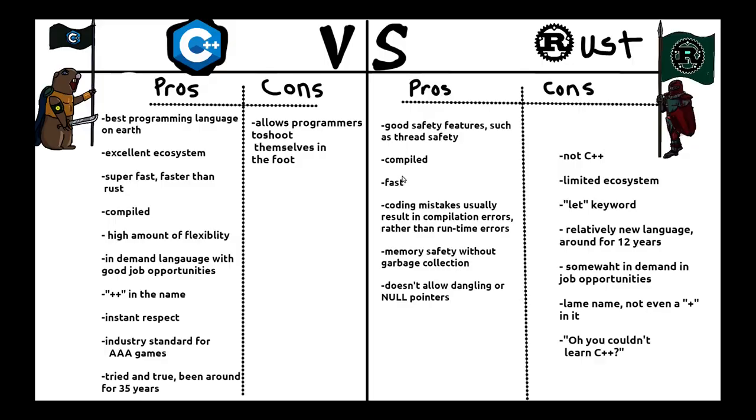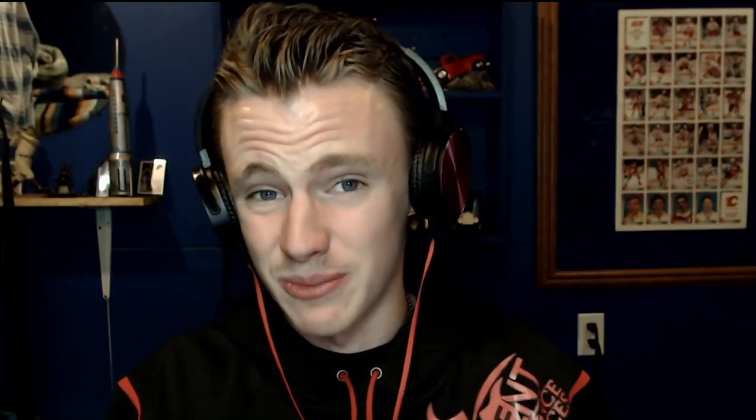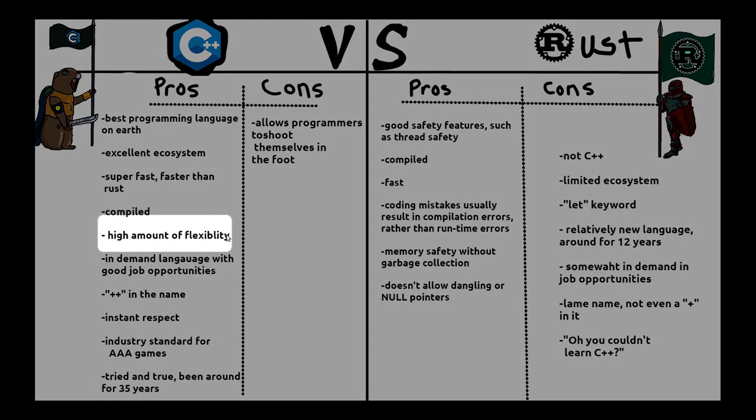The reason Rust and C++ are so fast is that they are compiled programming languages rather than interpreted. The long and short of it is that C++ and Rust compile into machine code and then are run, rather than compiling into machine code as you're running it.